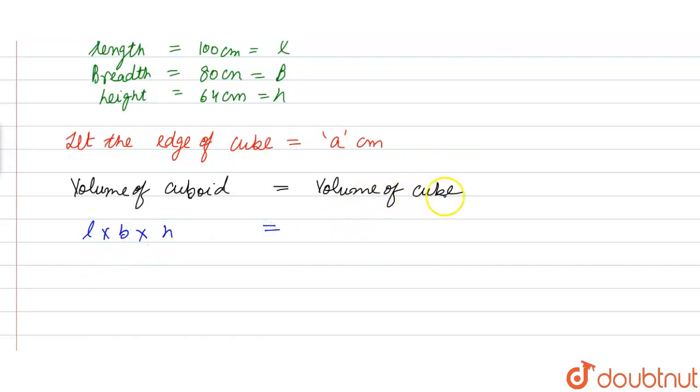So we have l is 100 centimeter into b is 80 centimeter into h is 64 centimeter is equal to a cube. So a cube is equal to 100 into 80 into 64 centimeter cubes.